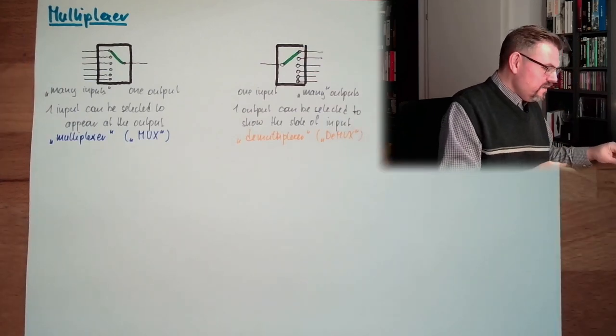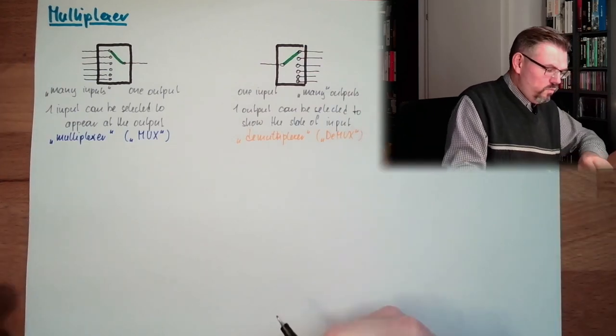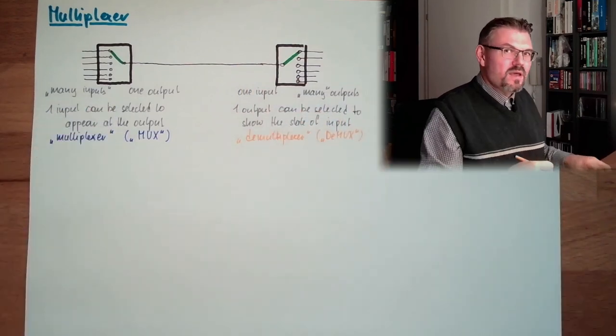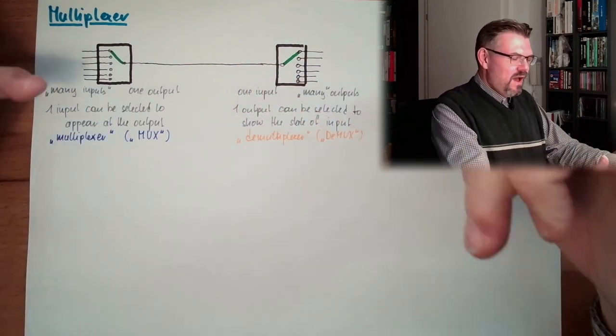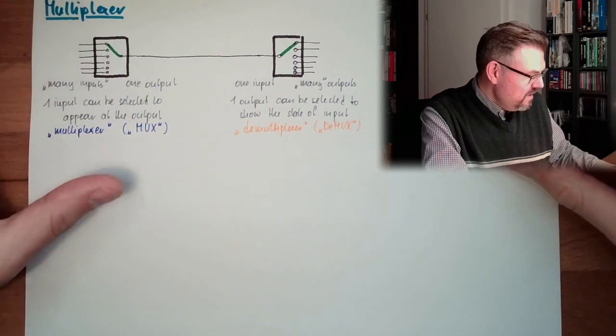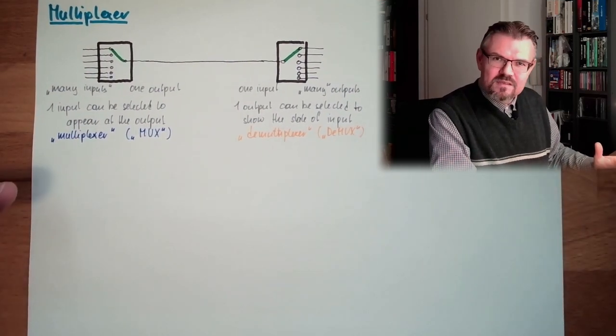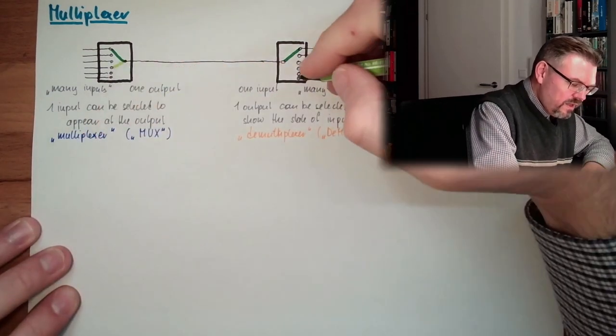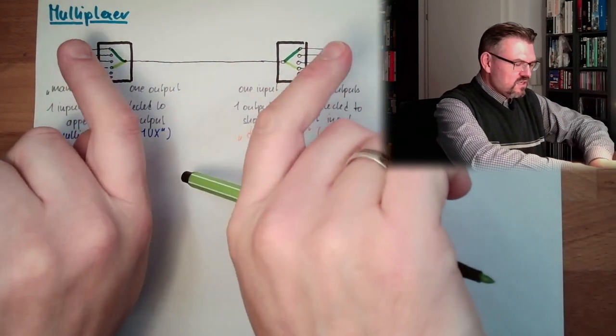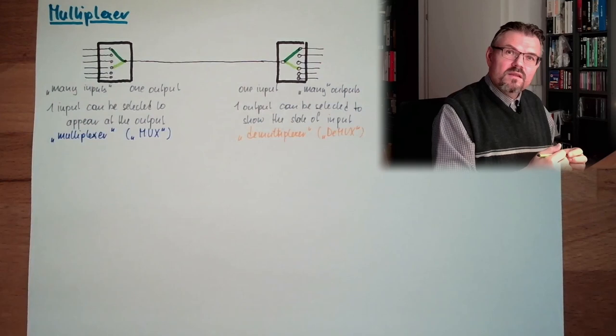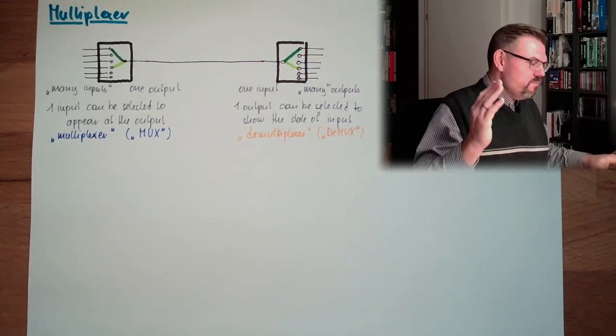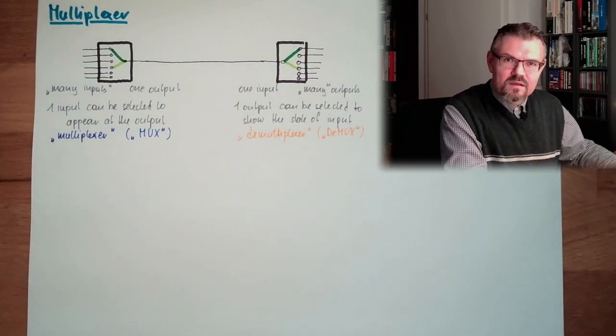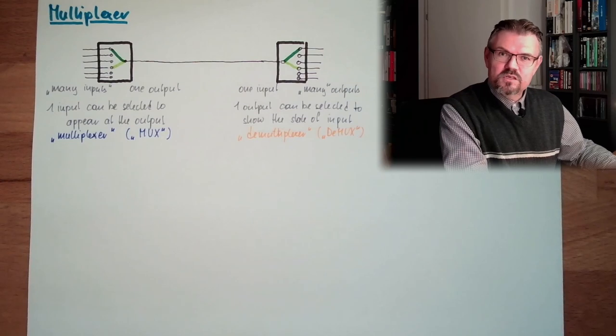And if I connect those two with a line, and always switch them at the same point in time, I can transfer over one line a bunch of signals. So, at the second point in time, I may have selected this one, and here this one. So, it's always switching triggered or somehow at the same point in time. And suddenly, I can transfer a lot of signals over a single line. For instance, serial communication.